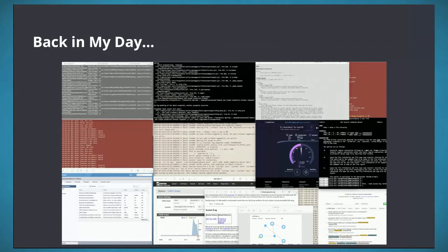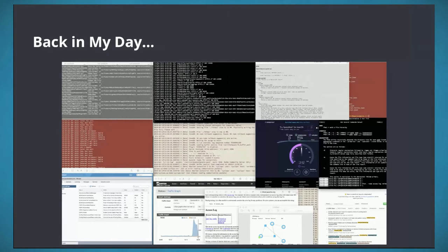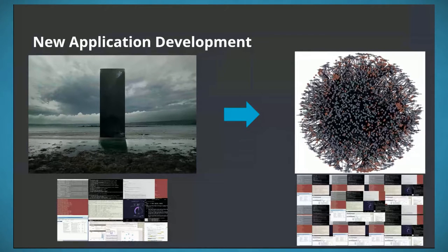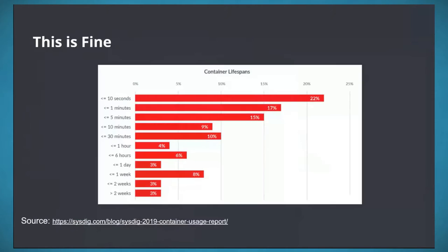Typically you'd jump on the syslog server and do a tail-f to find what the issue was. While this worked for monolithic apps, the industry is quickly moving to microservices. How do you troubleshoot network issues on ephemeral infrastructure or containers within Kubernetes or OpenShift? Approximately 39% of containers only live for less than a minute, according to Sysdig in 2019.